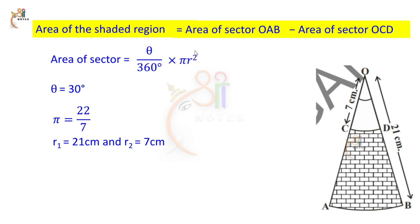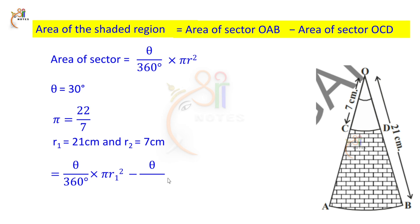Now, write down the area of sector OAB with the same formula, and area of sector OCD with the same formula. For the shaded region, substitute R1 for the big sector and R2 for the small sector: theta by 360 degrees into pi R1 square minus theta by 360 degrees into pi R2 square.